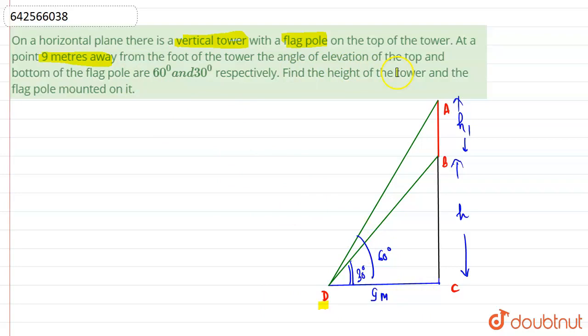The angle of elevation of top and bottom of flagpole are 60°. So this is top, so top point is A. So angle of elevation of point A is 60° and angle of elevation of bottom of flagpole is 30°. It is given. We have to find height of the tower and flagpole mounted on it. So let's start the question.